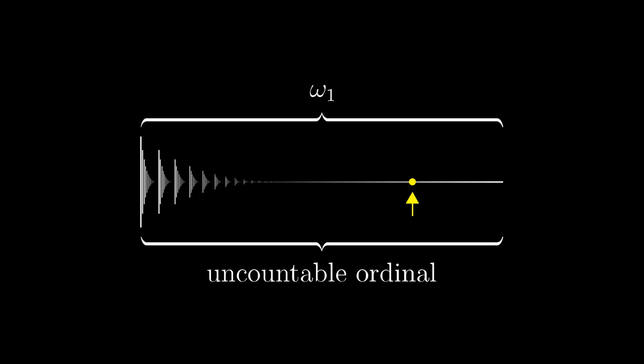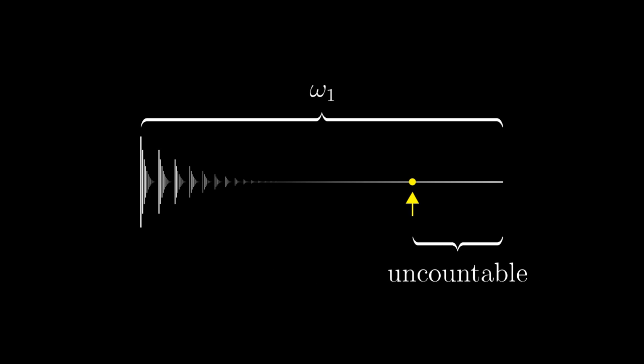It is actually the shortest uncountable ordinal number and it is indexed by all the countable ordinal numbers. So, every countable ordinal splits omega one into a countable initial segment and an uncountable terminal segment.